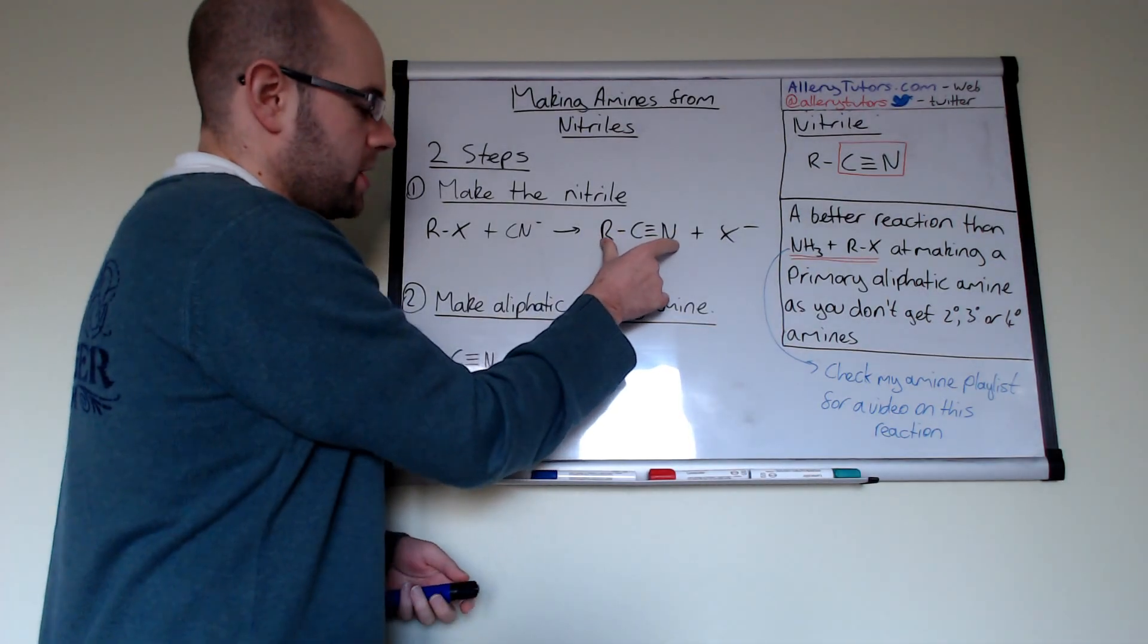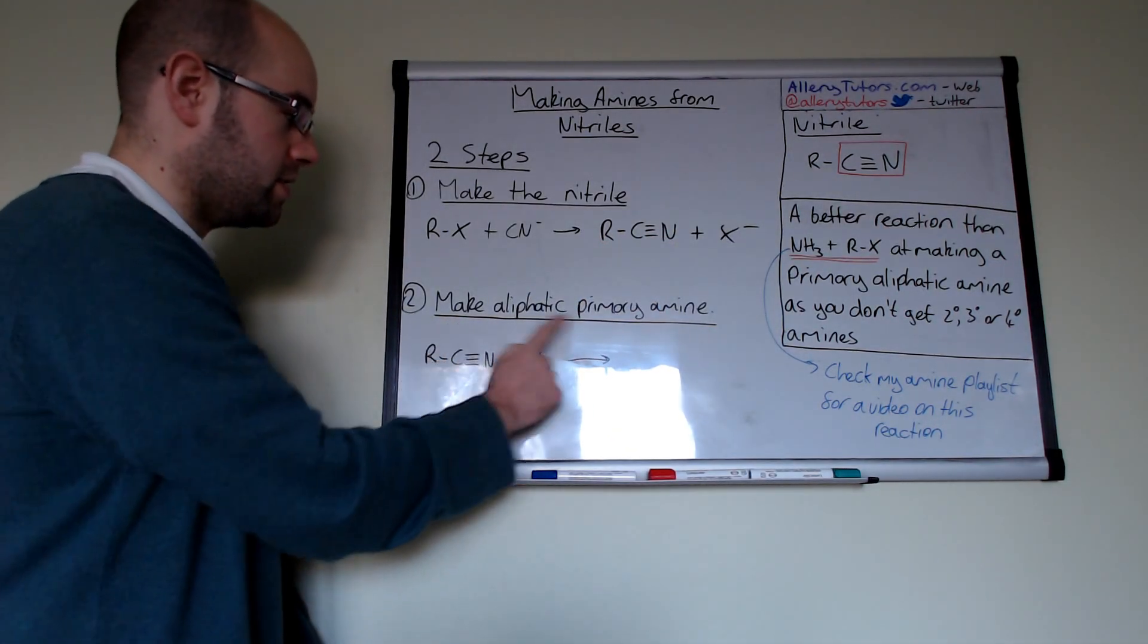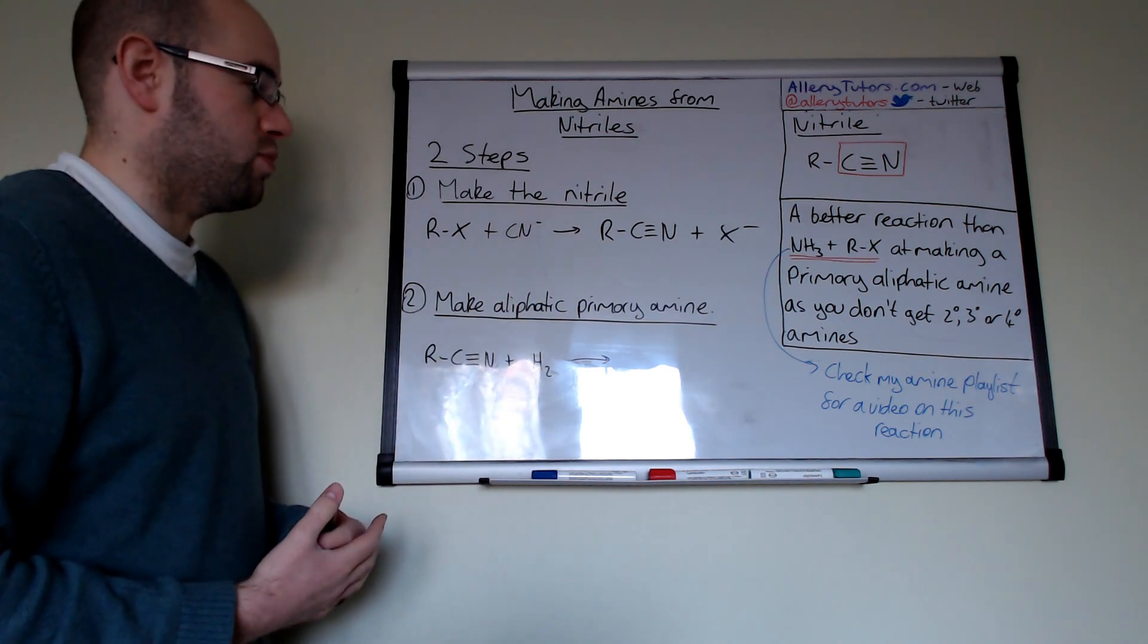And then what we do is you take this product here which is this one and it becomes a reactant in the second step and this is how you would make an aliphatic primary amine.